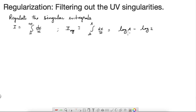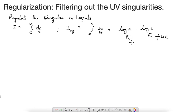As lambda goes to infinity you recover back the original integral i. So i-regulated goes over to i when you take lambda to infinity. But when you put lambda to be a large but finite number, this is how the singularity appears. There are two terms: one is finite — that is the finite contribution — and one is the singular contribution, singular in the lambda going to infinity limit. So this is an example of a regulator.